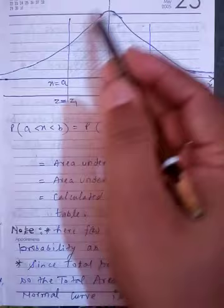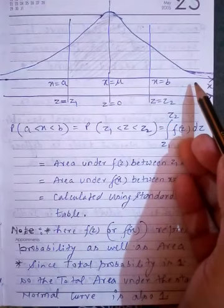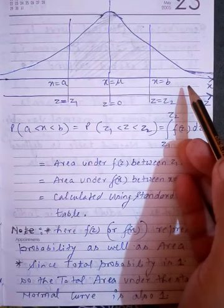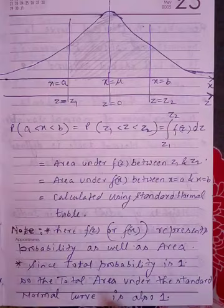Since total probability equals 1, the total area under the normal curve from minus infinity to plus infinity — when we integrate f(z) over the entire range — equals 1. The total area under the standard normal curve is 1. The normal curve is symmetrical about its mean.